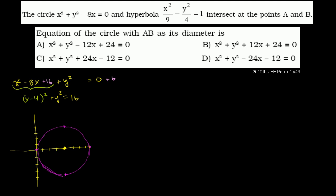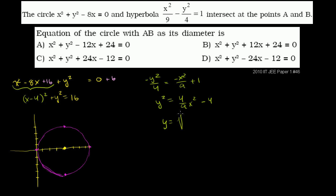We can actually figure out the asymptotes. Solving for y: negative y squared over 4 equals negative x squared over 9 plus 1. Multiplying both sides by negative 4 gives y squared equals 4 ninths x squared minus 4, so y equals the square root of 4 over 9 x squared minus 4. As x gets larger and larger, this approaches the square root of 4 over 9 x squared.